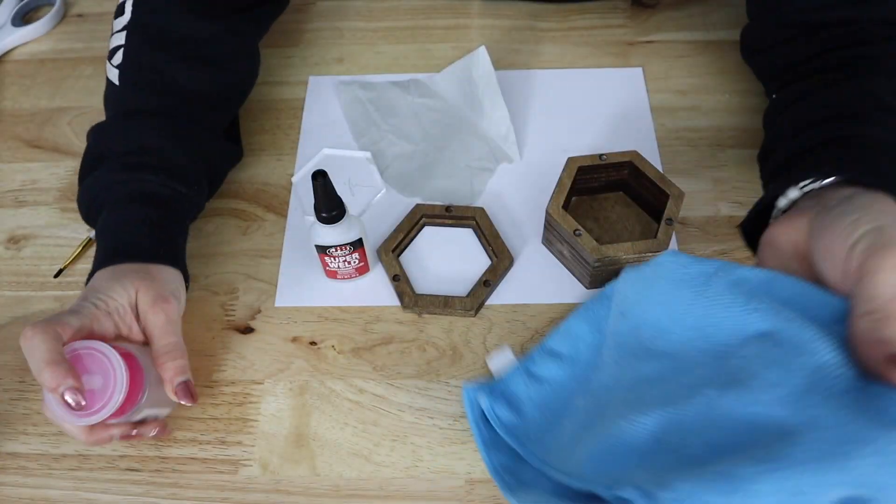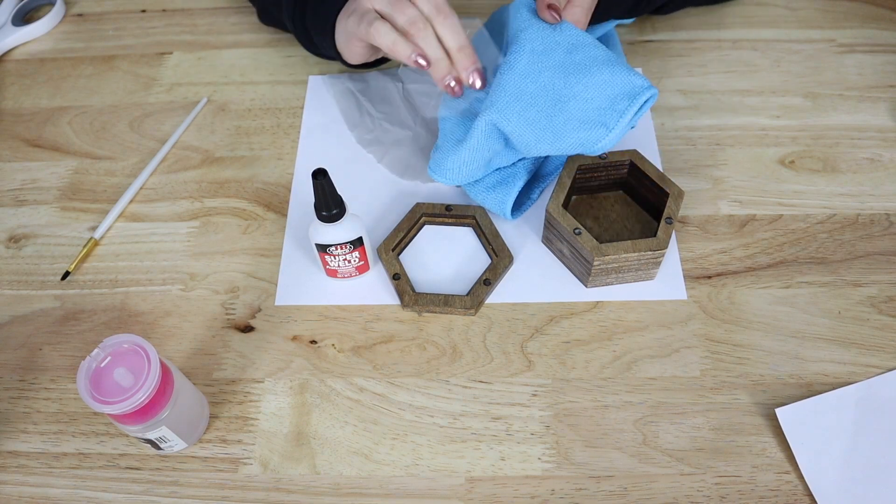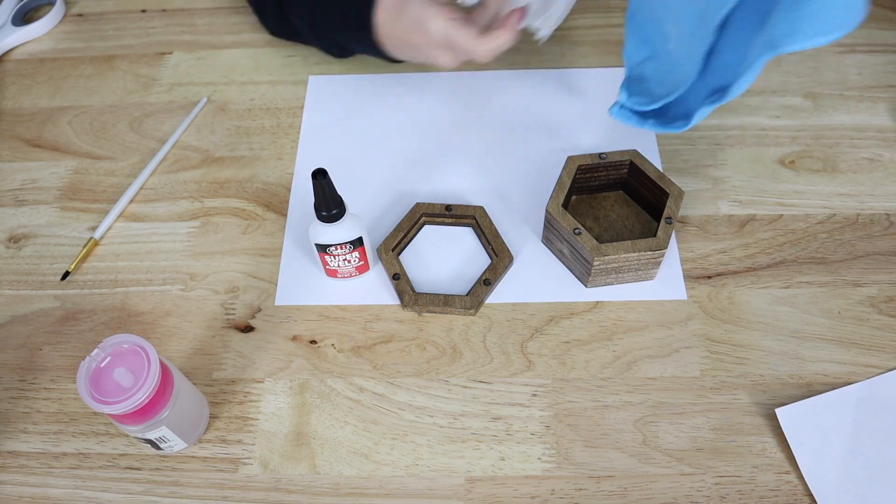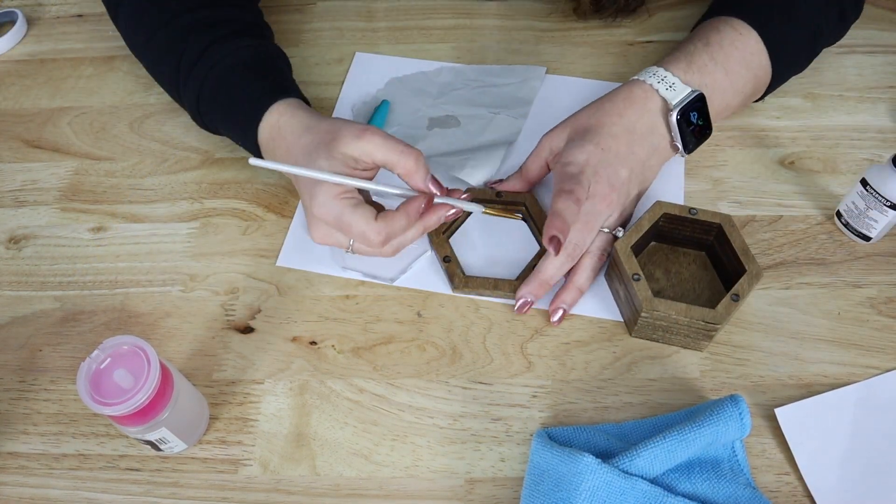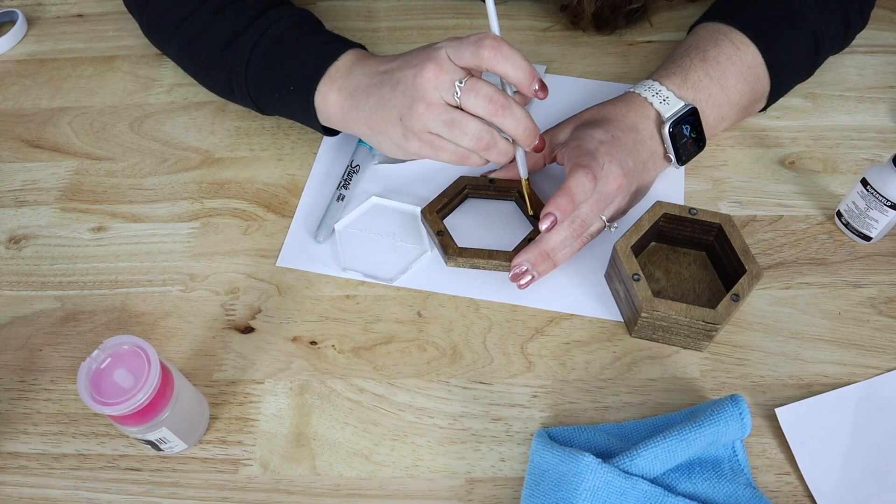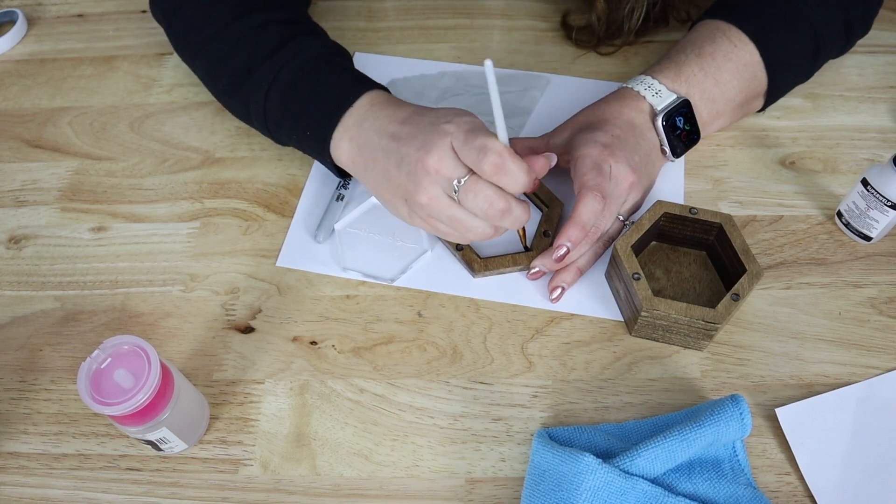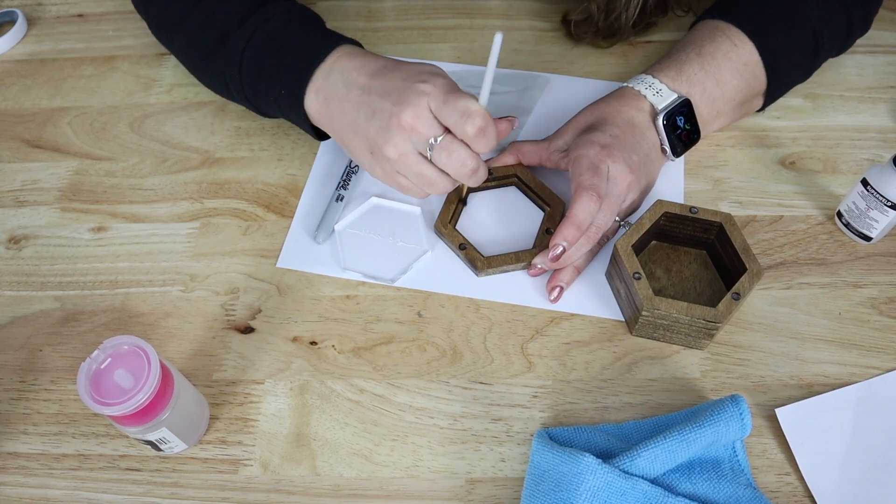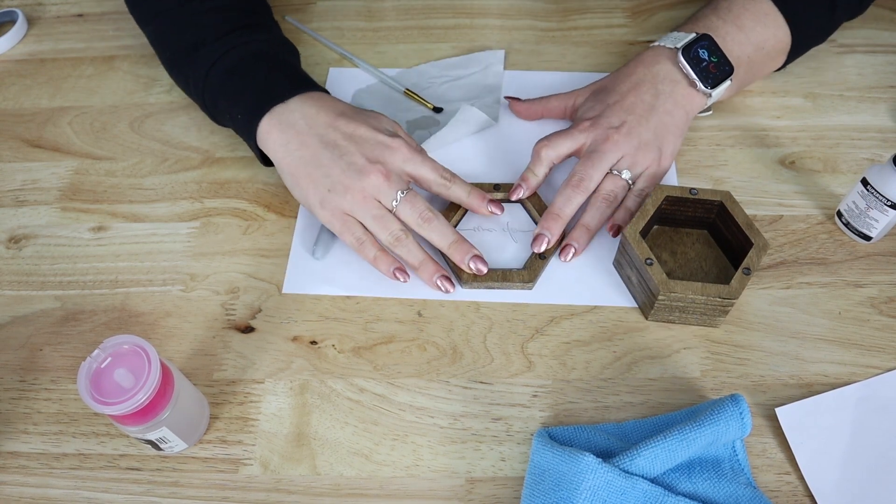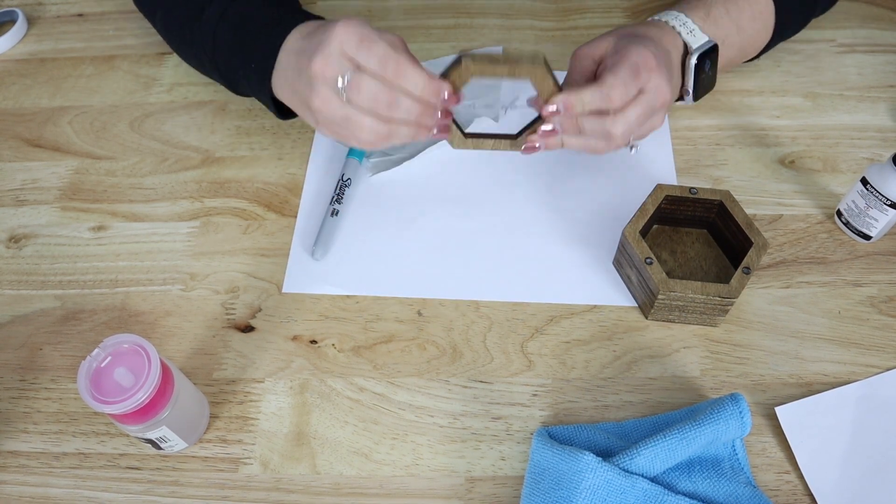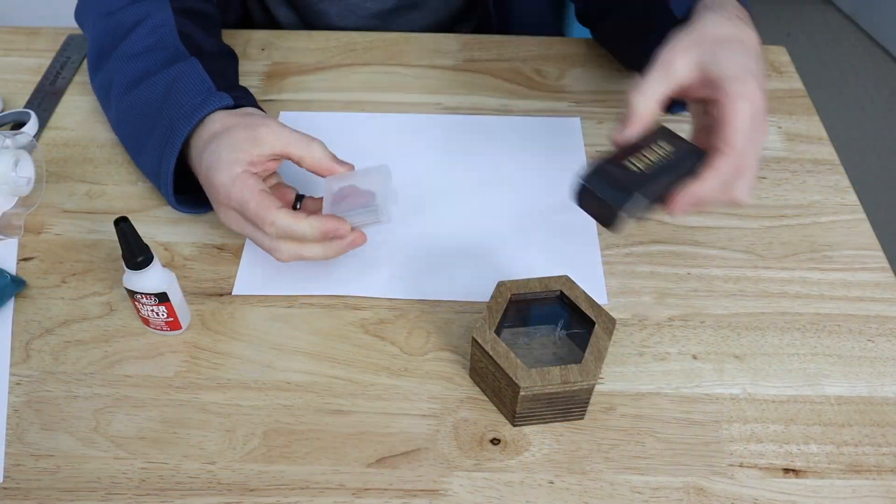We're going to clean it with some alcohol to make sure all the human and adhesive is removed from it before we use JB Super Weld. We like using this glue, especially when we're doing mixed media, like wood to acrylic or wood to metal or something like that. It's just a really solid glue. And so again, we're using a paintbrush because we don't want this to squeeze out at all, because we would see that on the acrylic. We're going to hold that in place. And then after it cures overnight, we're ready to move on to the next step.